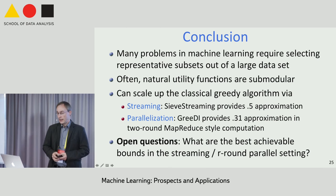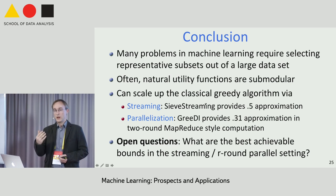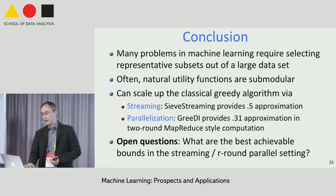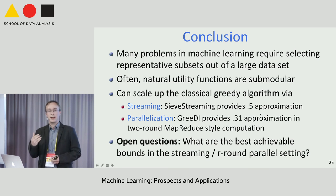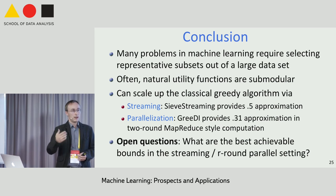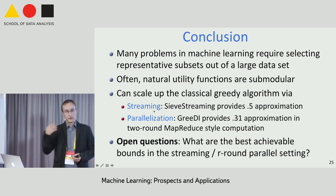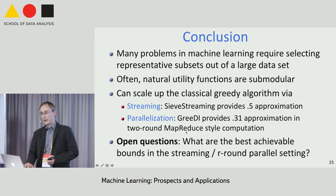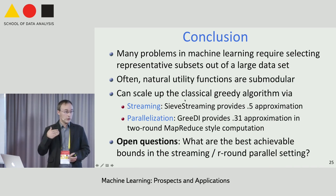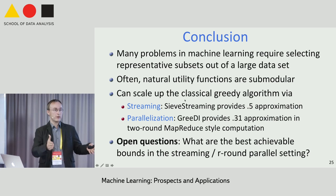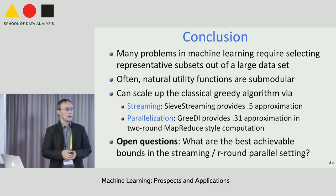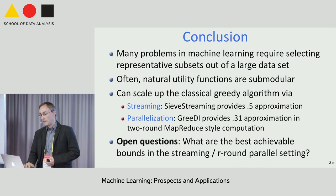To summarize: many problems in machine learning require data summarization, which can be addressed naturally as constrained submodular maximization. This gives a nice use case for scaling up classical submodular optimization algorithms like greedy. I described two lines of work: streaming algorithms and parallel optimization. There's also an upcoming JMLR paper on handling constraints beyond cardinality constraints, and an upcoming NIPS paper on solving distributed coverage problems—controlling solution quality and finding the smallest possible set, a generalization of set cover.